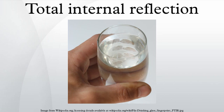When a wave crosses a boundary between different materials with different kinds of refractive indices, the wave will be partially refracted at the boundary surface and partially reflected. However, if the angle of incidence is greater than the critical angle — the angle of incidence at which light is refracted such that it travels along the boundary — then the wave will not cross the boundary and instead be totally reflected back internally. This can only occur when the wave in a medium with a higher refractive index hits a surface in contact with a medium of lower refractive index.